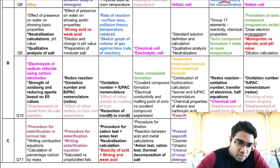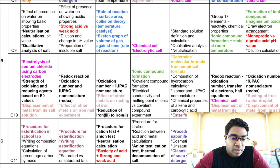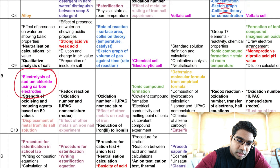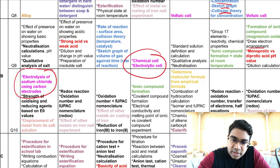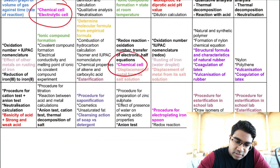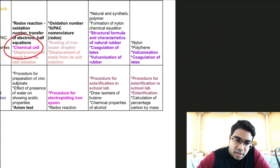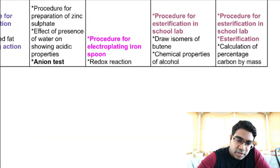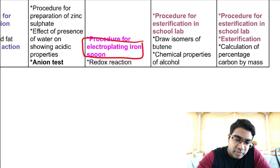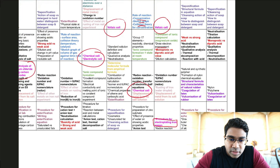For Section B, electrochemistry is definitely recurring this year. We have electrolysis, chemical cell, electrolytic cell, and voltage cell repeating across multiple states. For one state, there was even a Section C question on the procedure for electroplating of an iron spoon. So electrochemistry is a clear recurring topic.